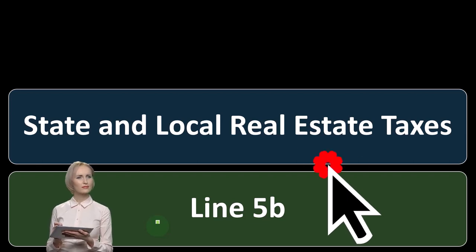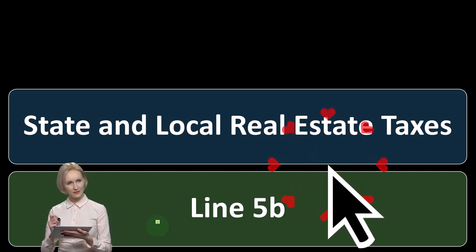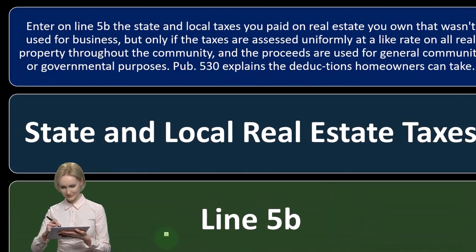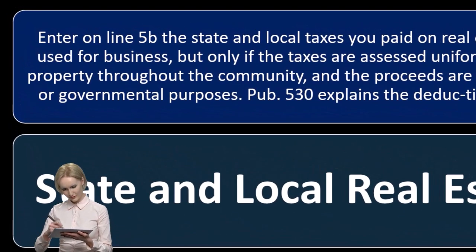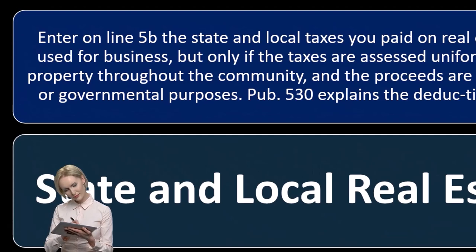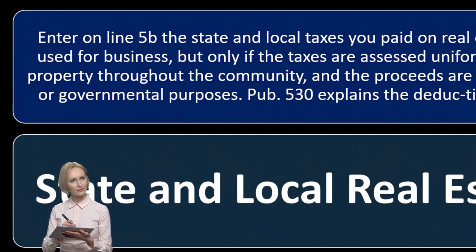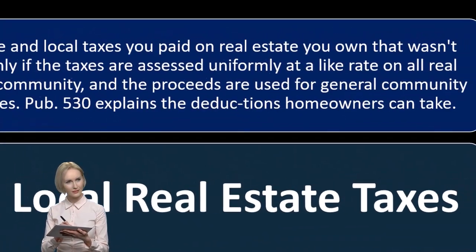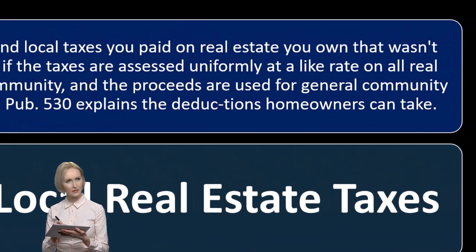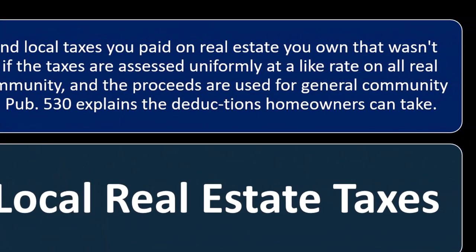Line 5B: state and local real estate taxes. Enter on line 5B the state and local taxes you paid on real estate you own that wasn't used for business.